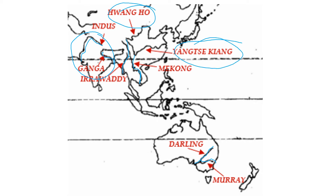Here we have two rivers in China — the Yangtze and the Huang He. Here is the Huang He, and below that we have the Yangtze. So these are the rivers in Asia.